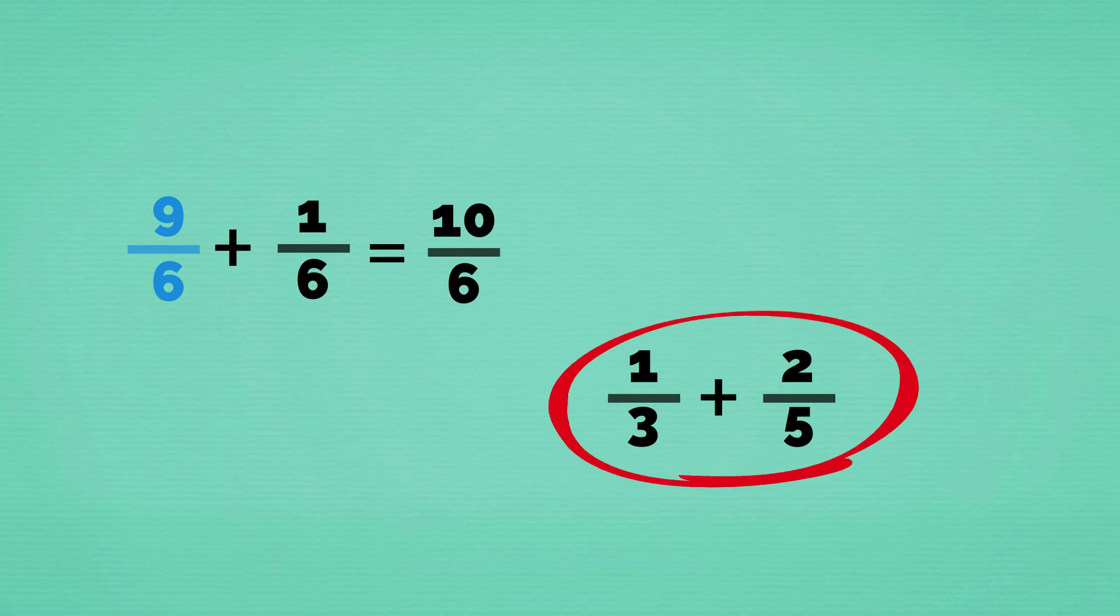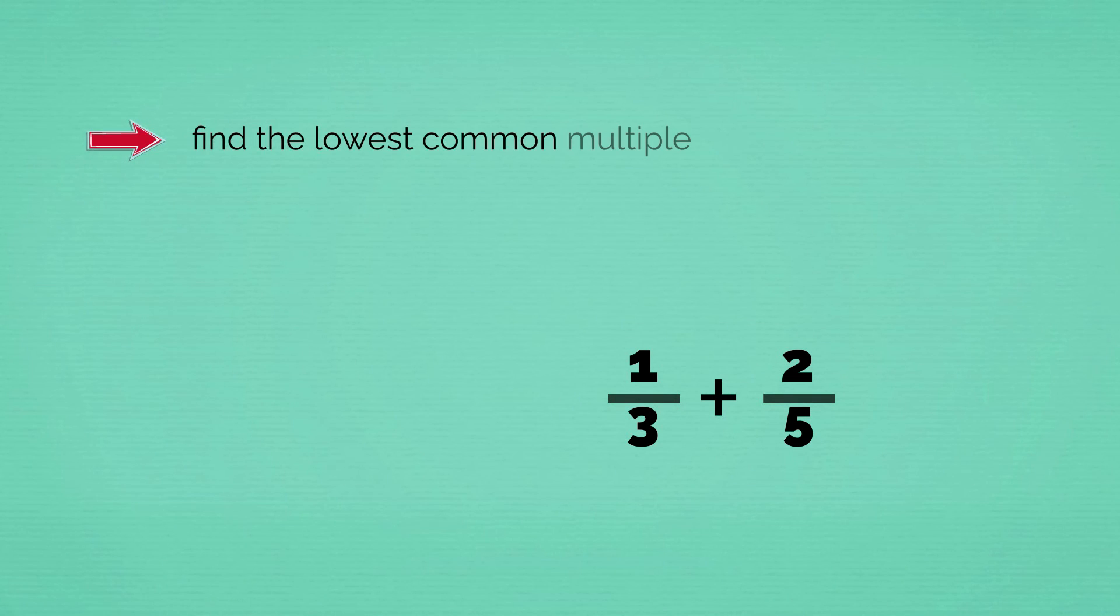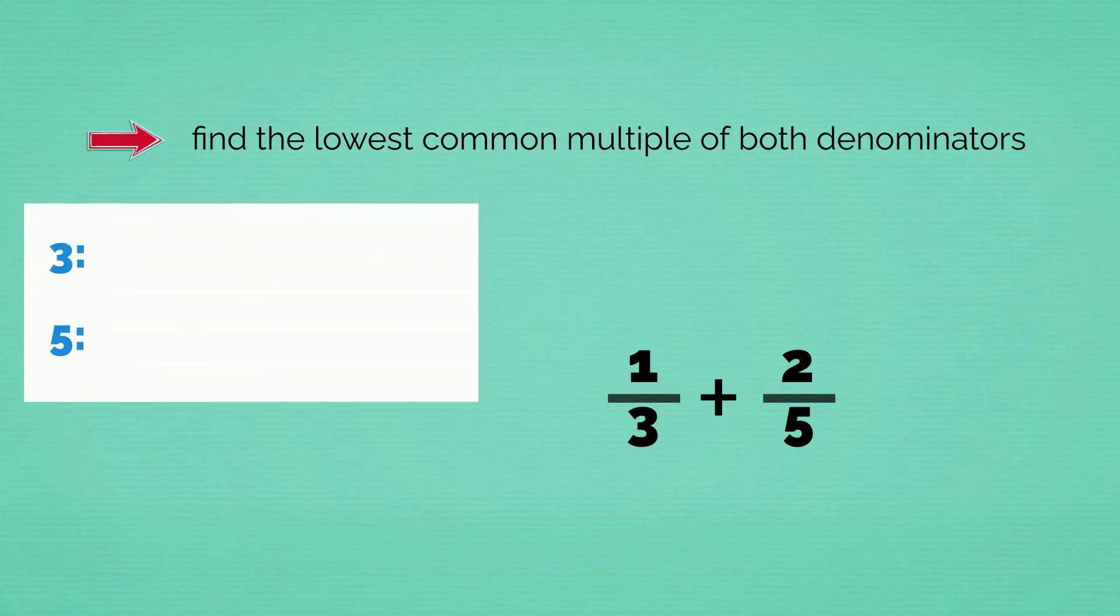The second one. These are unrelated fractions, because 3 doesn't multiply evenly into 5. We need to find the lowest common multiple of 3 and 5. Here are the first few multiples of 3 and here are the first few multiples of 5. The lowest common multiple is 15.